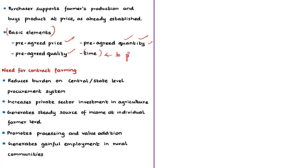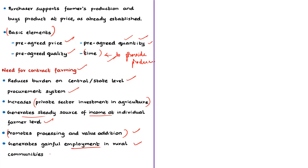Contract farming is needed to reduce the load on central and state level procurement systems, as private entities can now procure goods for their use. It is also needed to increase private sector investment in agriculture, generate a steady source of income at the individual farmer level, and promote processing and value addition to the commodity.